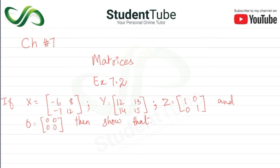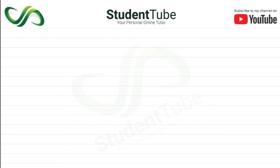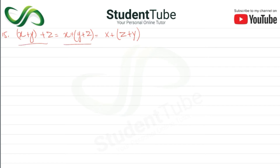Question number 15 asks us to show that X plus Y plus Z is equal to X plus (Y plus Z), and also equal to (X plus Z) plus Y. So we have to find three different expressions and show that they are all equal.